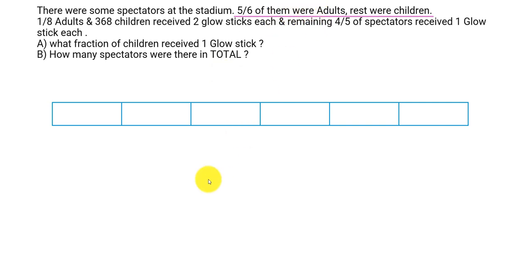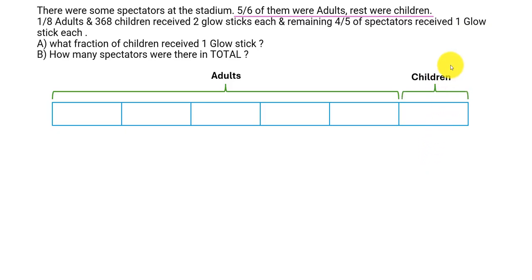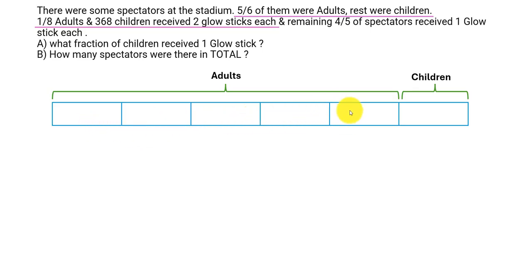five of those six parts are adults, and the remaining one part is children. The next statement is one-eighth of adults, meaning one-eighth of these five units, and 368 children received two glow sticks each.